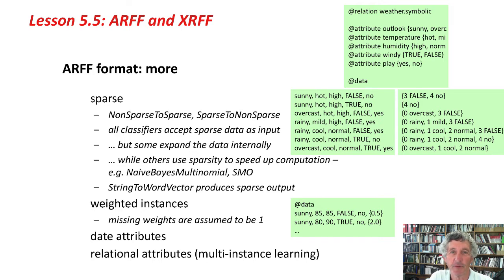The first instance, which is sunny, hot, high, false, no. In the sparse format, the first value of each attribute is considered the default. Sunny, hot, and high are all default. The first instance in the sparse format just specifies attribute number 3 — we count from 0 — attribute number 3 is false, and attribute 4 is no.